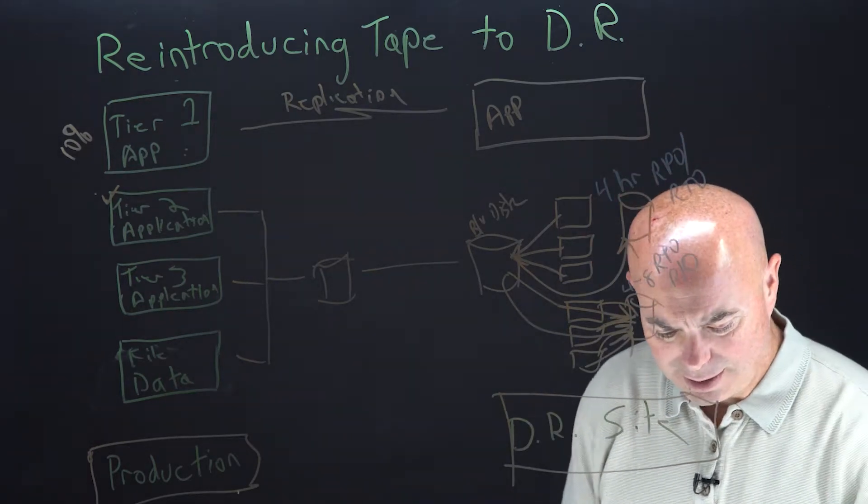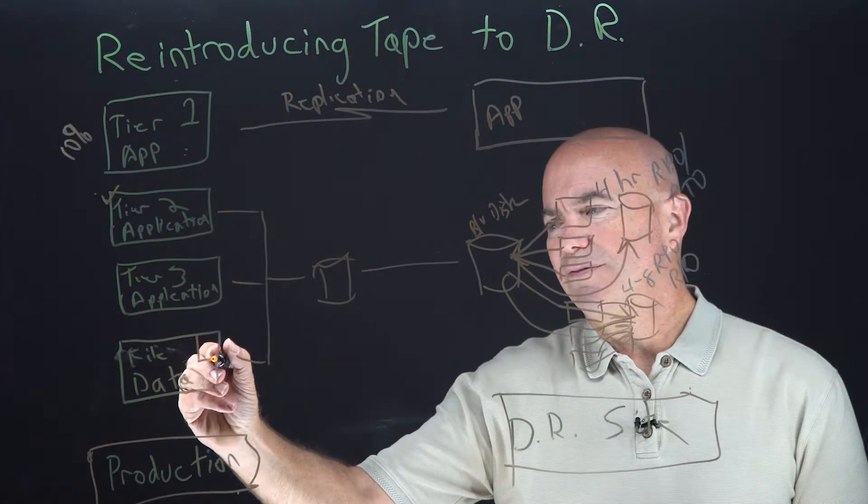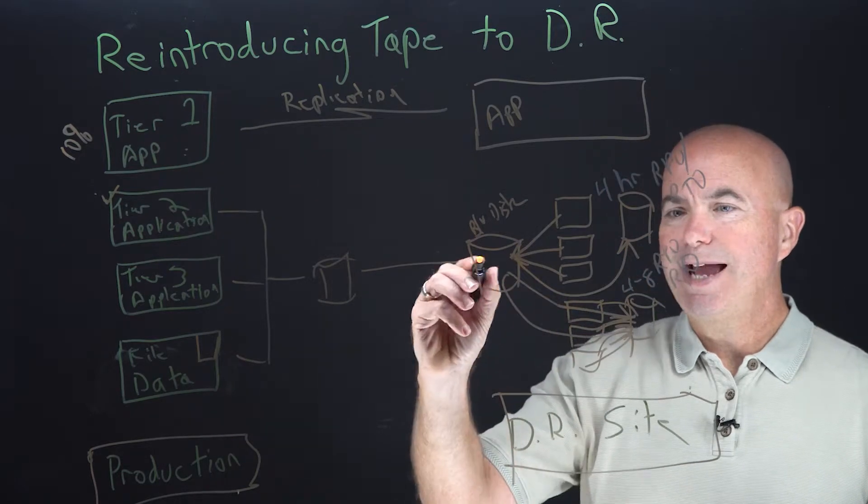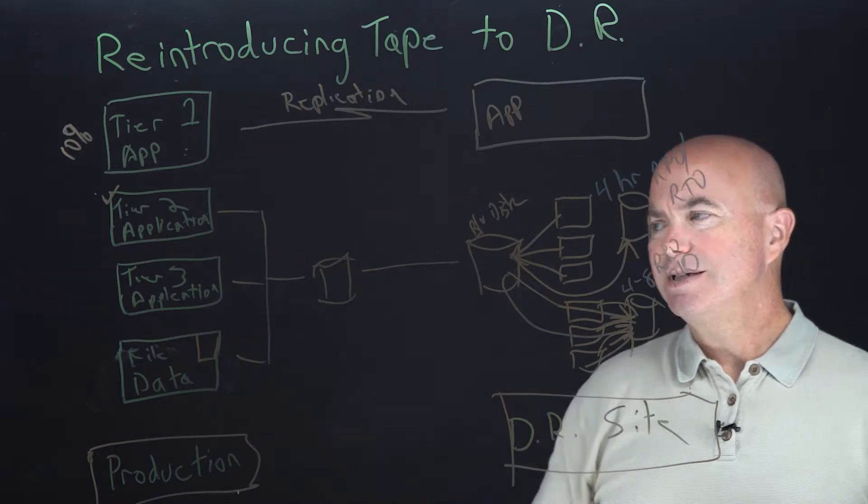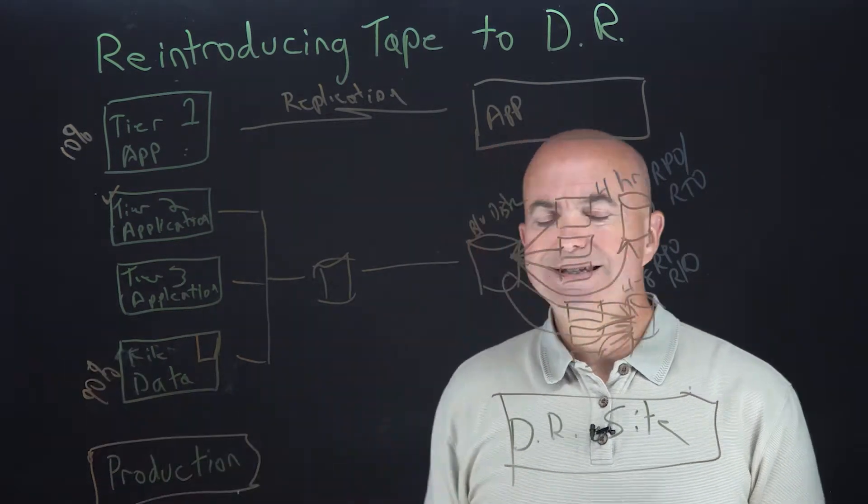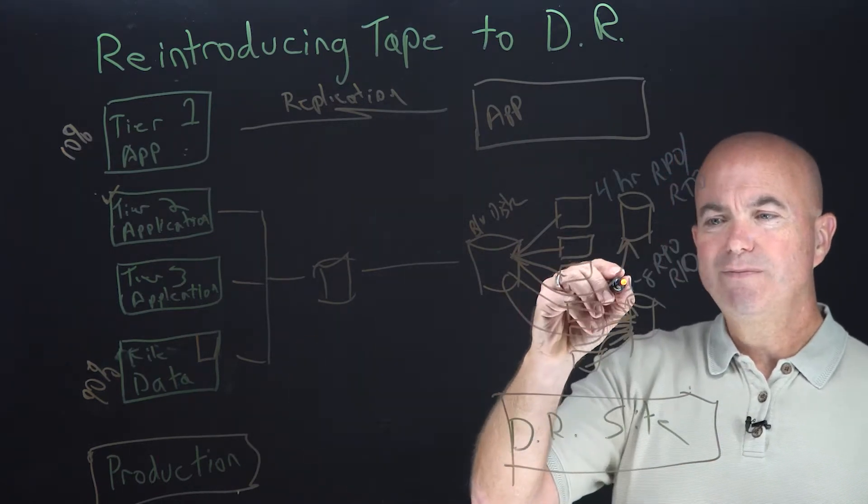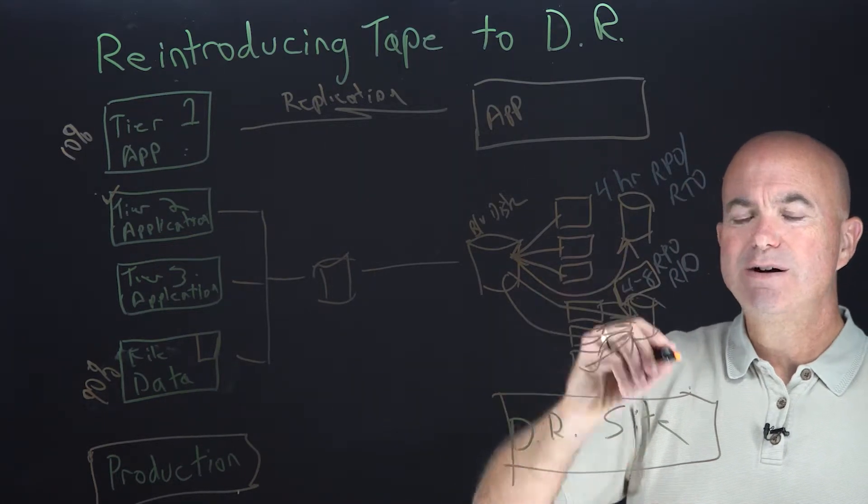In file data, clearly there's a chunk of file data that probably has to come back pretty quickly, and that will probably happen as part of this tier two recovery. But there's a vast amount of data, probably 90% of it, that does not need to be recovered right away.